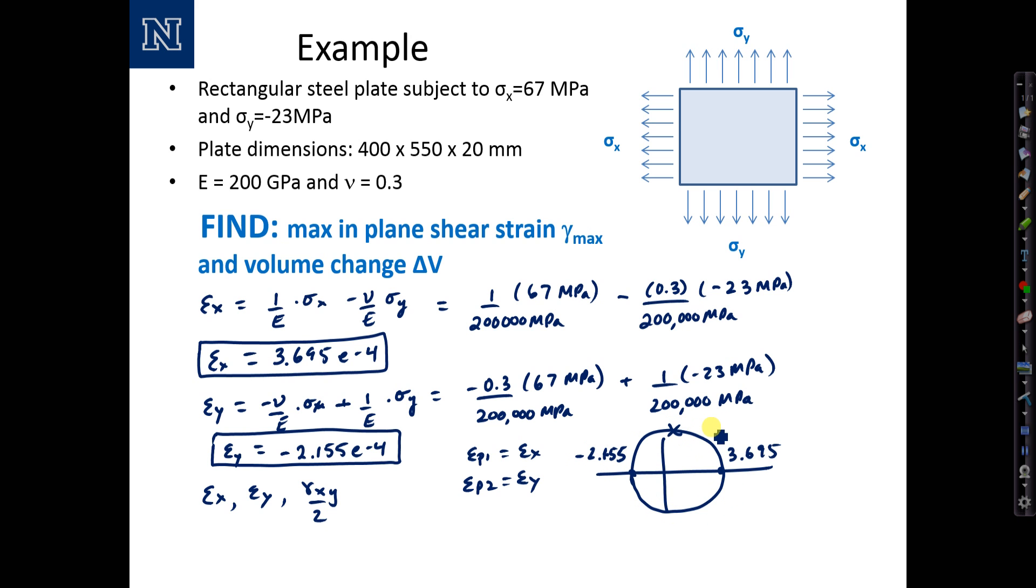And our maximum shear strain, gamma max over 2, would be somewhere up there. The formula for gamma max over 2 is the radius of the circle epsilon x minus epsilon y over 2. So I can conclude gamma max equals epsilon x minus epsilon y: 3.695 minus a negative, so plus 2.155 times 10 to the minus 4, and that leaves me with 5.85 times 10 to the minus 4. This is gamma max.